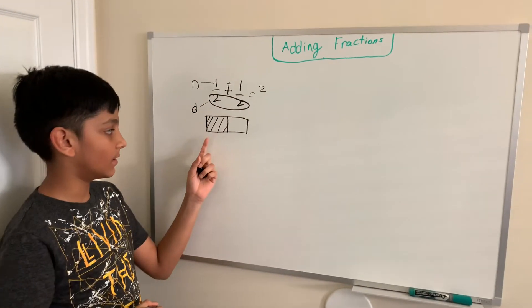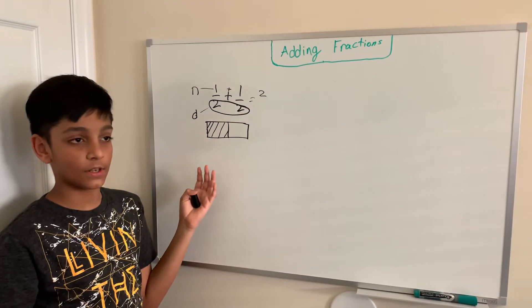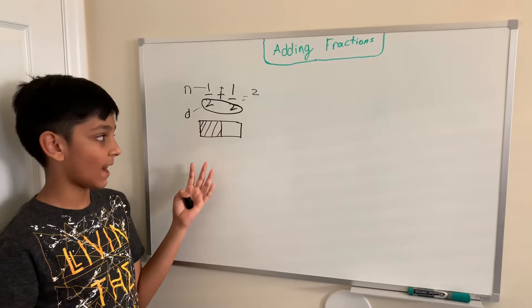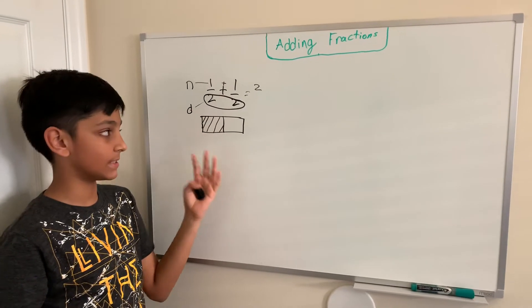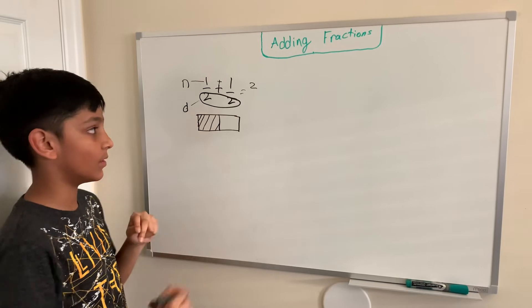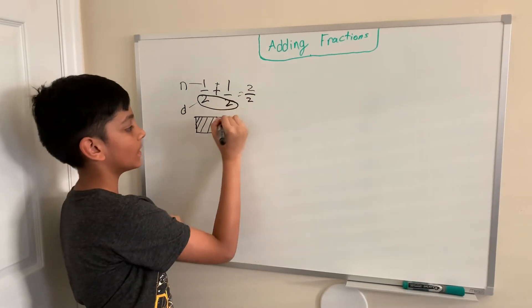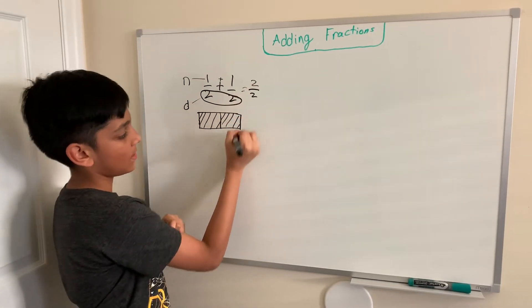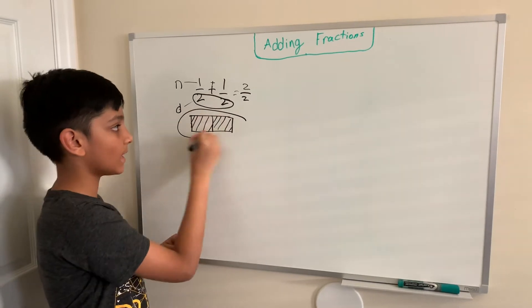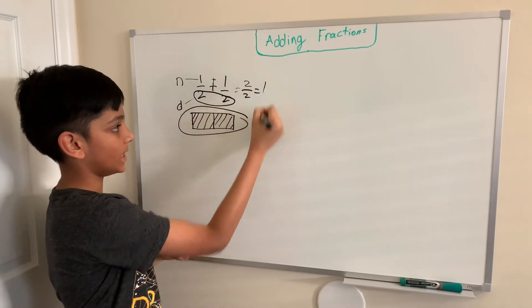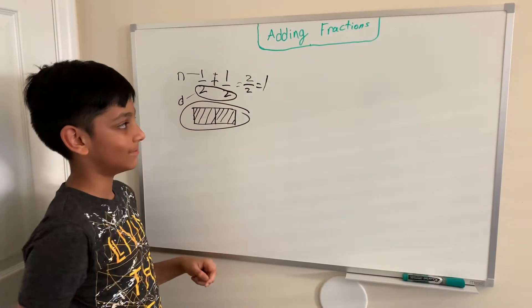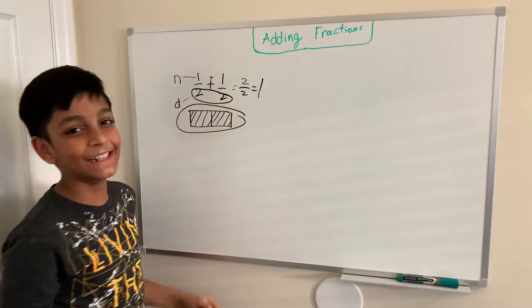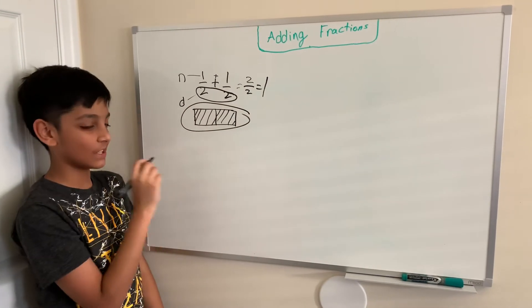We want to keep our denominator the same. This is because the amount of the pieces that I have in the whole is the same throughout the whole equation. So, we want to keep that the same. And I have the full hole now. Two halves. That will equal to one.